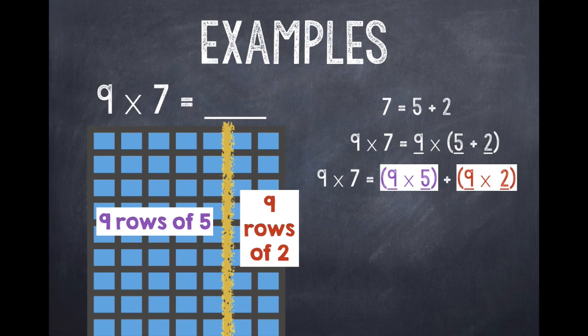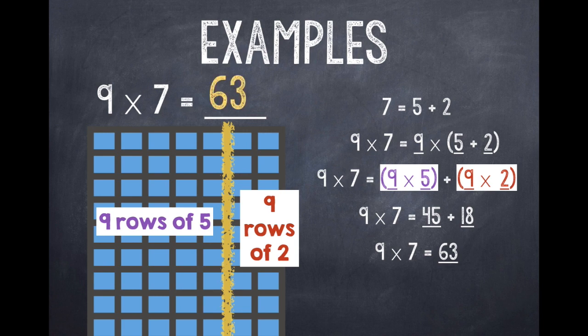And 9 × 2 equals 18: 2, 4, 6, 8, 10, 12, 14, 16, 18. So when I rewrite it, 9 × 7 is equal to 45 + 18. And then I add up 45 + 18. And remember if you need to, you can rewrite it vertically. Remember when you're adding to start in your 1's place first. Once I add it up, I see that 9 × 7 equals 63. So my product is 63.